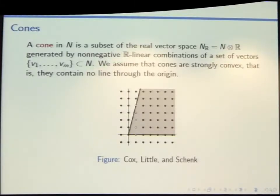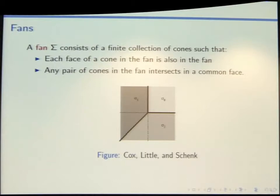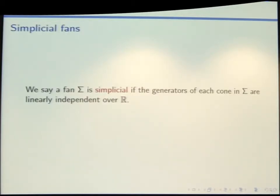We start with cones, which are built out of non-negative linear combinations of some set of lattice vectors, and we want cones that don't contain lines through the origin. You can glue your cones together to make a fan, the same way that you would glue simplices together to make a simplicial complex. We want any face of a cone in our fan to also be in our list of cones, and any pair of cones should intersect in a common face. A technical condition: a fan is simplicial if the generators of each cone are linearly independent over the real numbers.